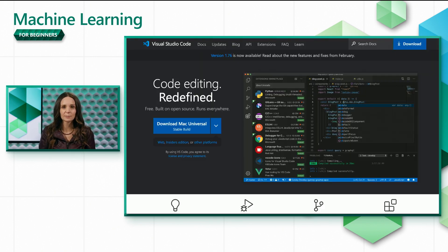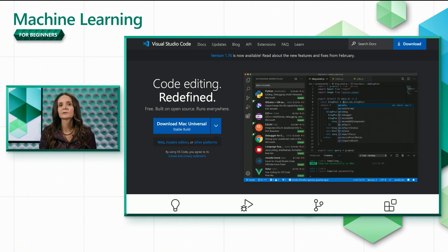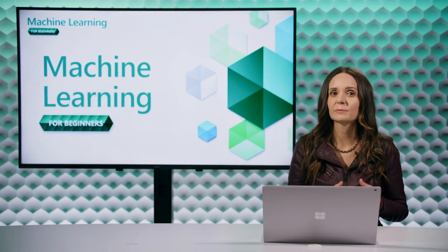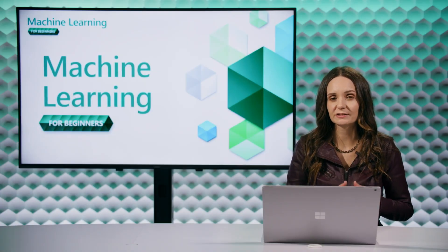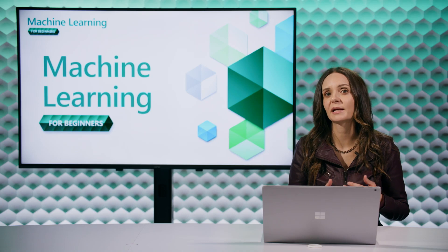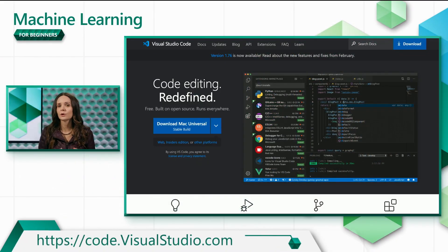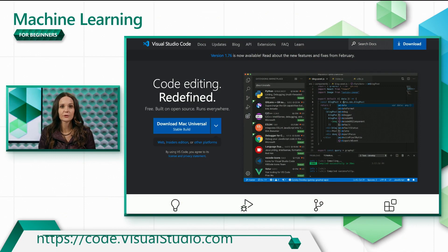A great way to run notebooks is through Visual Studio Code, also known as VS Code, which is a popular free code editor. VS Code can be configured with extensions that expand its functionality, as we'll see soon. To install VS Code, head to code.visualstudio.com and download the version for your OS.